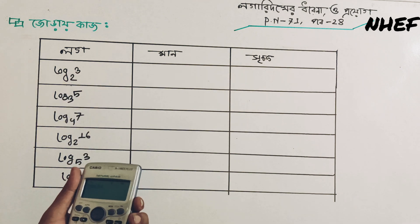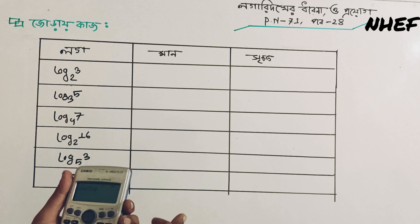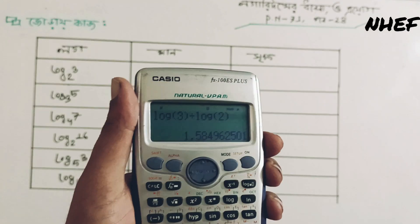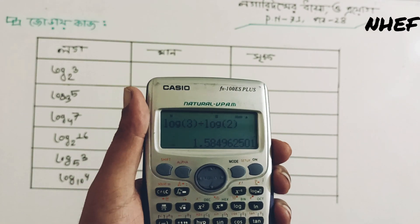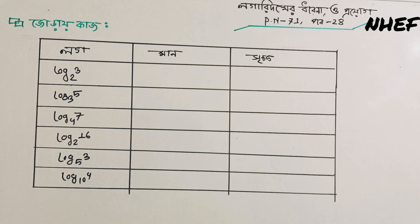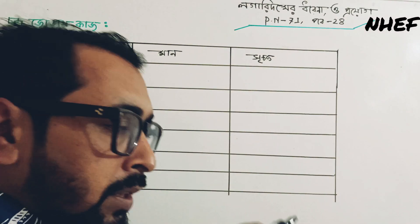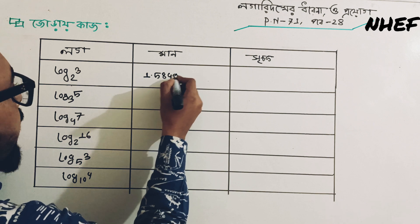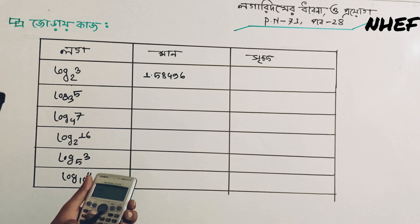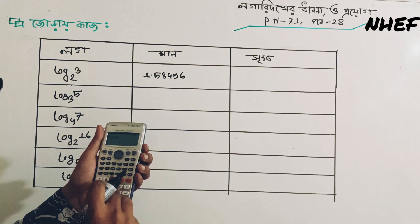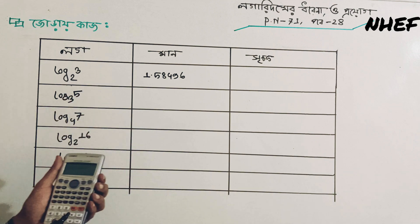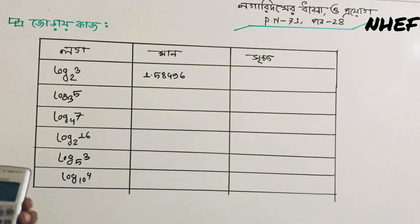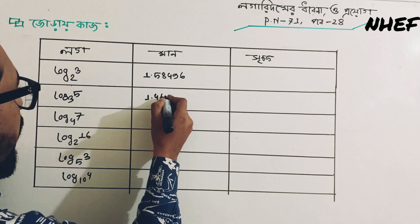We have to calculate the log argument. The argument is 3. Now log 2 is equal to 1.58. Log is equal to 1.46497.